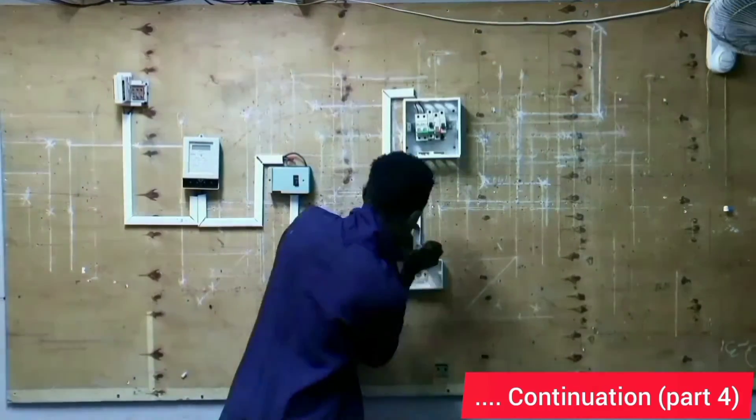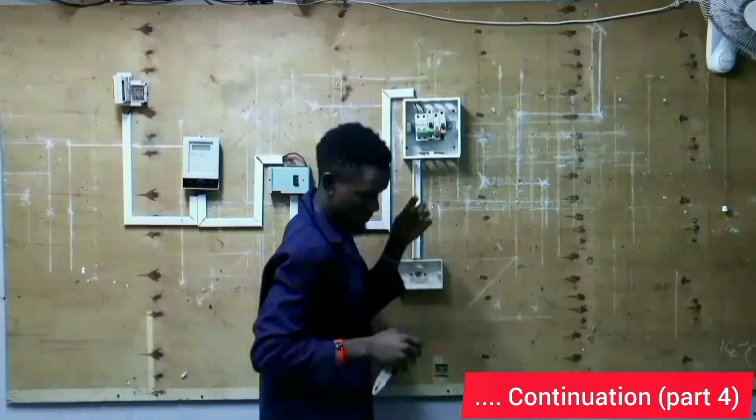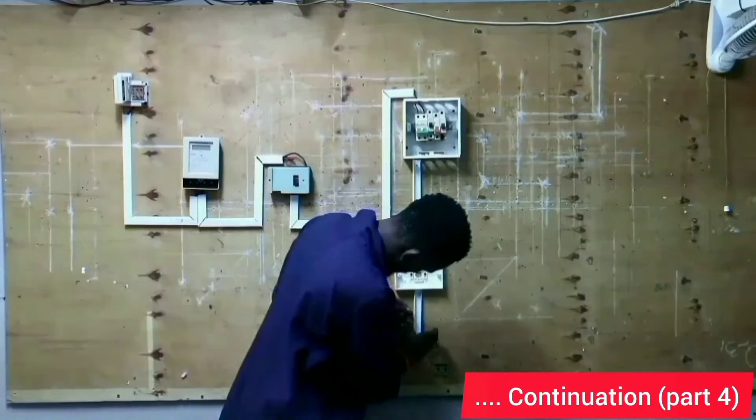Now, we start laying part-wise boxes so that we can connect our cooker control unit and our cooker terminal box.